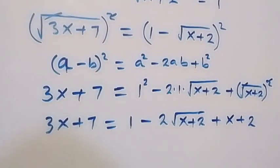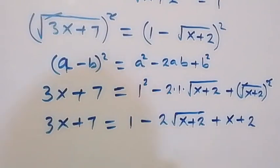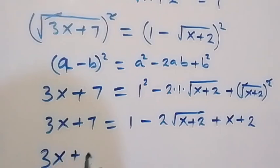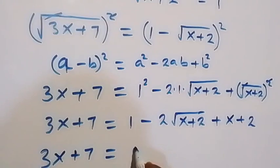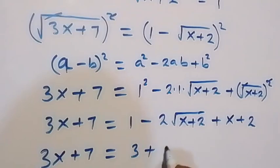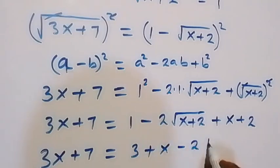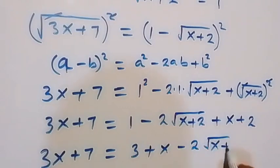From here on the right side, 1 plus 2 gives us 3, so this can be written as: 3x plus 7 equals 3 plus x minus 2 times square root of x plus 2.